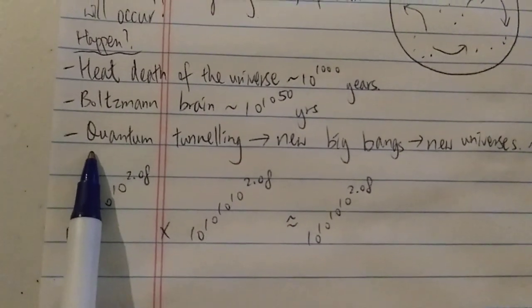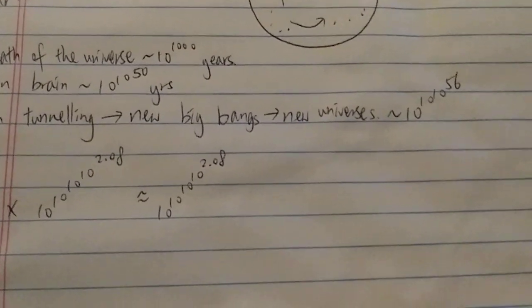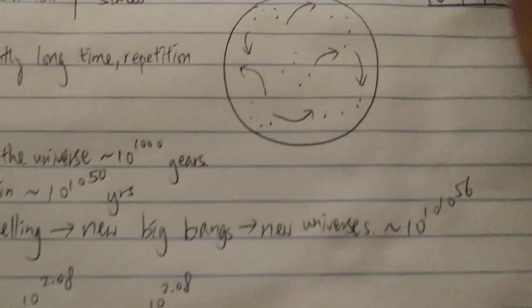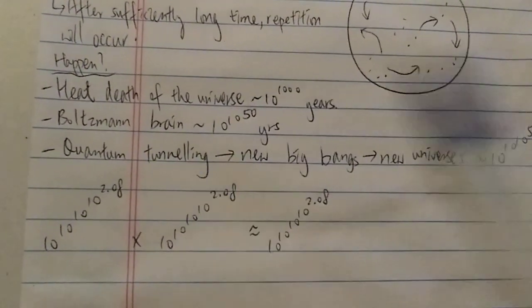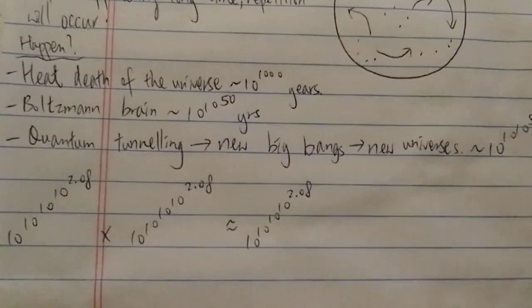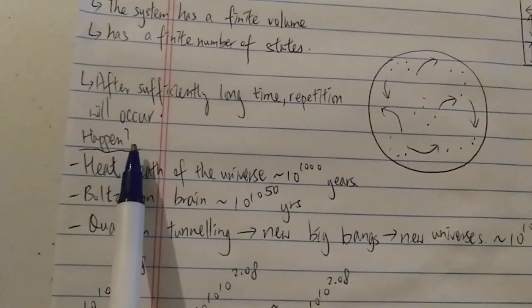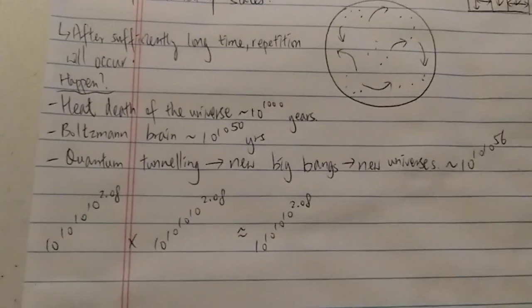Quantum tunneling, which could result in new Big Bangs generating new universes, would occur in around 10 to the 10 to the 10 to the 50 years. Again, that number is nothing compared to the Poincaré recurrence. All of these events would theoretically happen way before the Poincaré recurrence, so it's debatable whether the Poincaré recurrence will actually happen, or whether something else will have already occurred first.